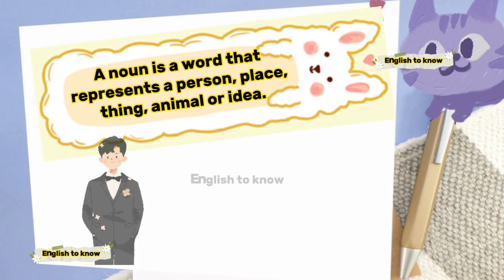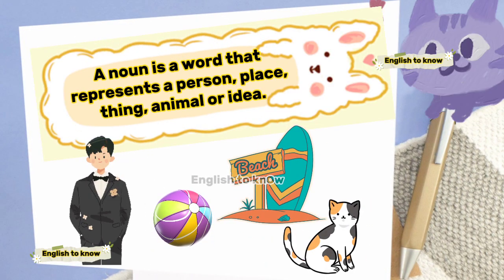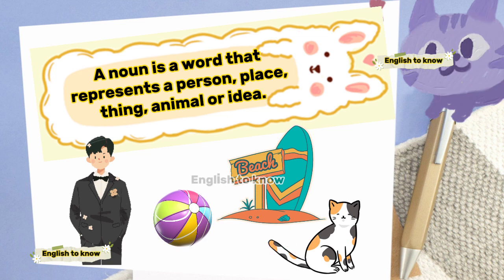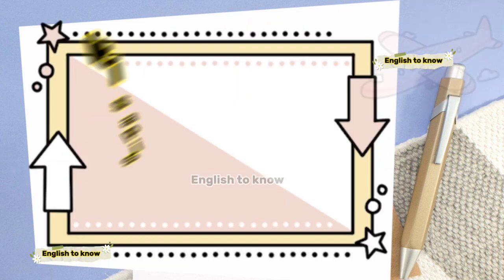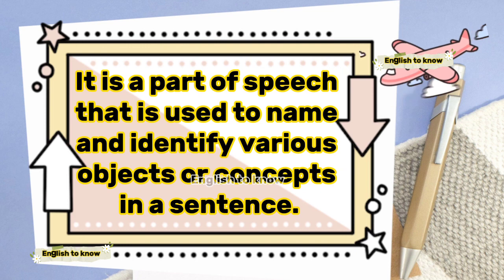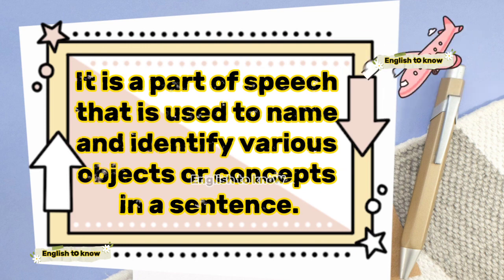A noun is a word that represents a person, place, thing, animal or idea. It is a part of speech that is used to name and identify various objects or concepts in a sentence.